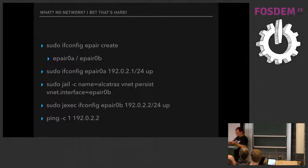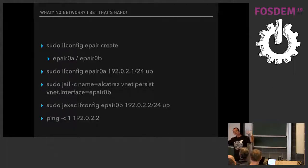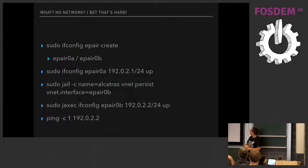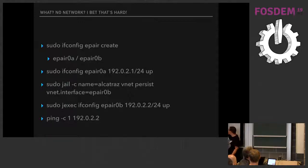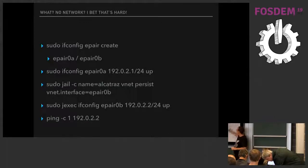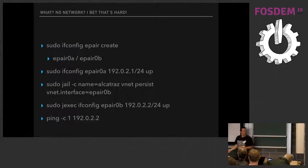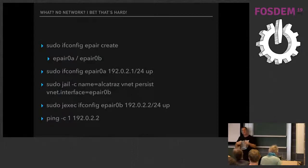What you need to do is create an epair — basically two virtual network cards with a cable between them. You can't use them to link two different machines but within one machine you can link up virtual machines or jails. You create one, assign an IP address to it, and tell the jail it can have this network interface. Jails make it really easy to execute things inside them: execute in the jail, run ifconfig on epair0b, set an IP address, bring it up. After that you have one external interface on the host and one internal interface inside the jail, and you can ping the jail.